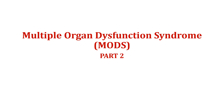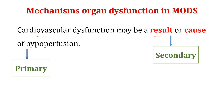Now we go to the second part. After finishing the pathophysiology of MODS, how patients can develop either primary MODS or secondary MODS, starting with the cardiovascular system. Cardiovascular dysfunction can result from hypoperfusion, or any hypoperfusion reason for the patients like shock conditions, post-traumatic, or whatever results in secondary cardiovascular impairment.